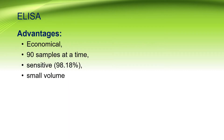Why do we use ELISA over other diagnostic kits? It is preferred because it is economical. We can run up to 90 samples at a time in 2-3 hours. It is more sensitive than rapid diagnostic kits, and even a small volume like 10 microlitres is used to detect antigen or antibody present in the patient serum.